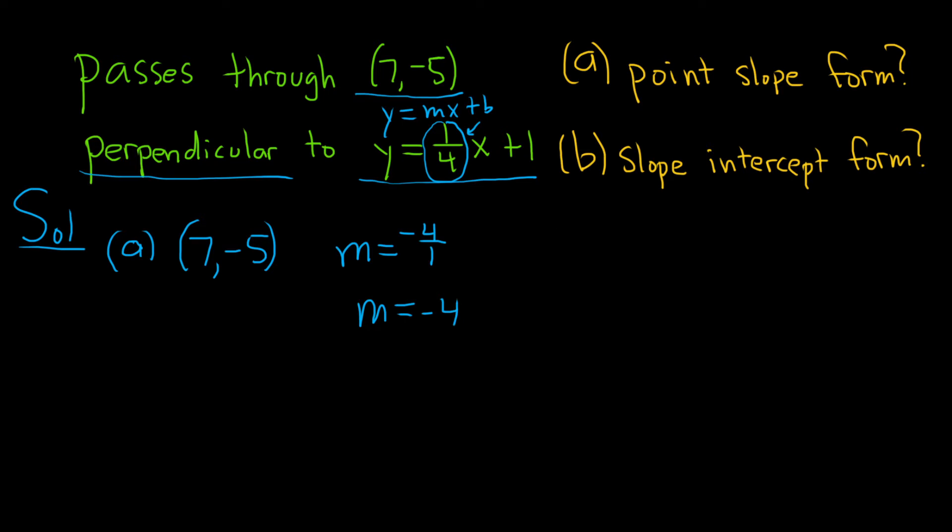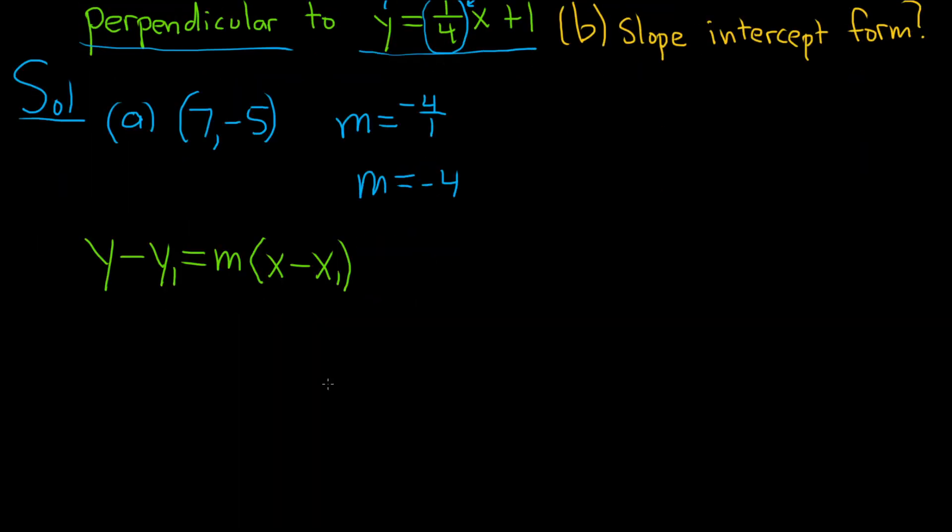All right, so now let's go ahead and write down the formula. So y minus y1 is equal to m times x minus x1. This is called the point-slope form of a line, and it's because you have a point and the slope.